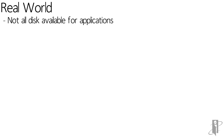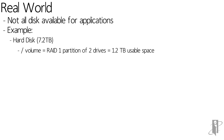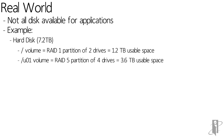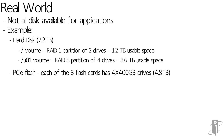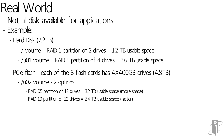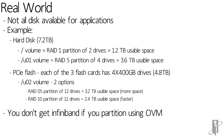In the real world, not all disk is available to all applications. The 7.2 terabytes of hard disk varies by RAID configuration: with RAID 1 you get 1.2 terabytes usable; with RAID 5 you get 3.6 terabytes. Similarly, the 4.8 terabytes of flash storage yields less usable space depending on whether you use RAID 5 or RAID 10.